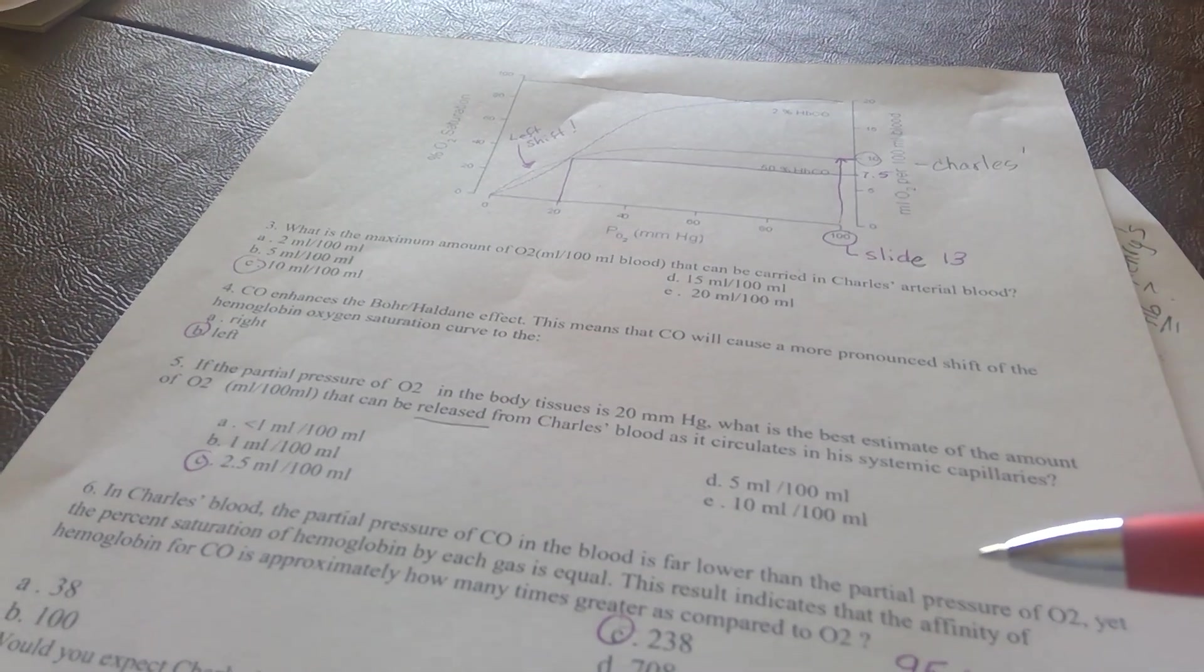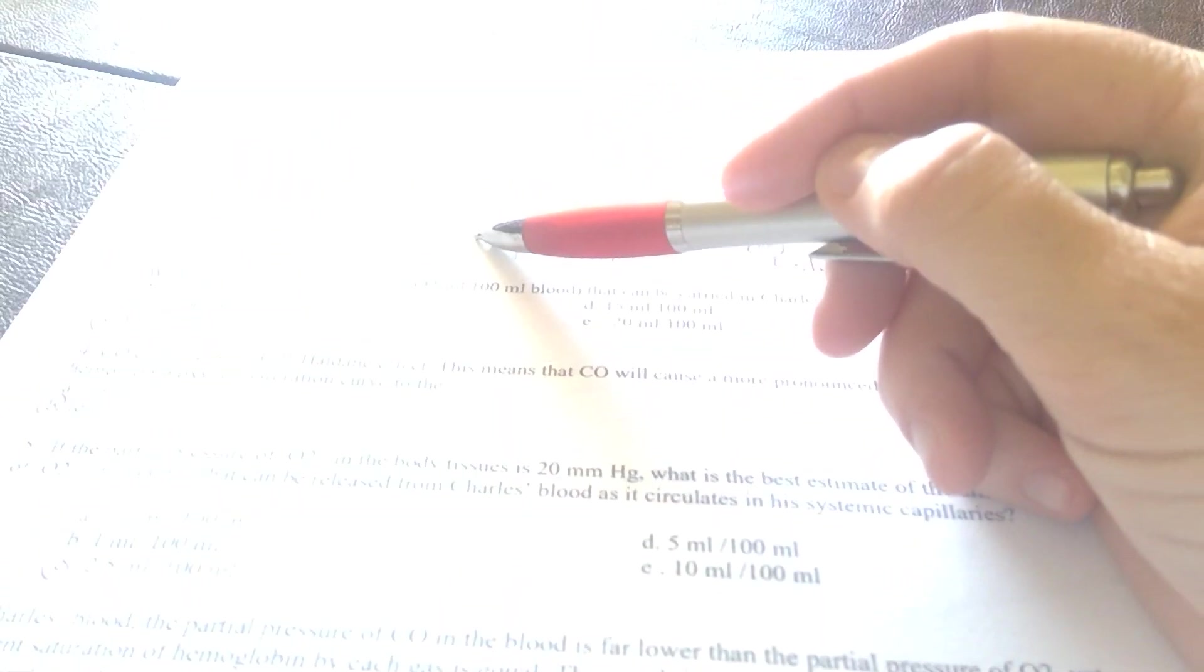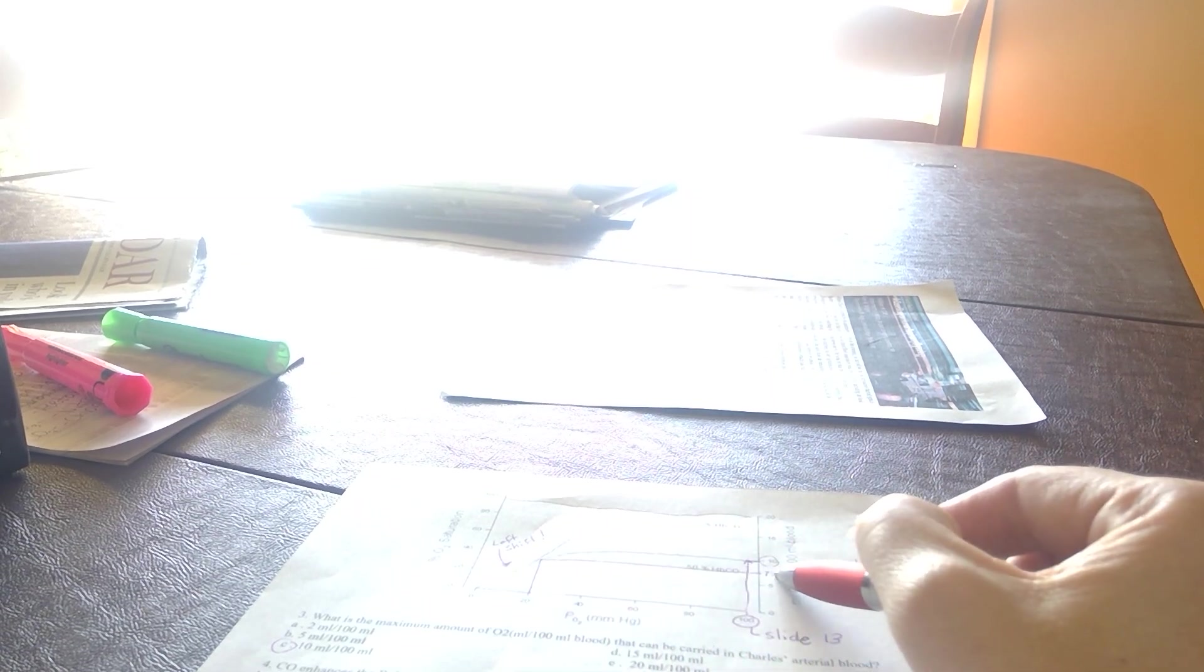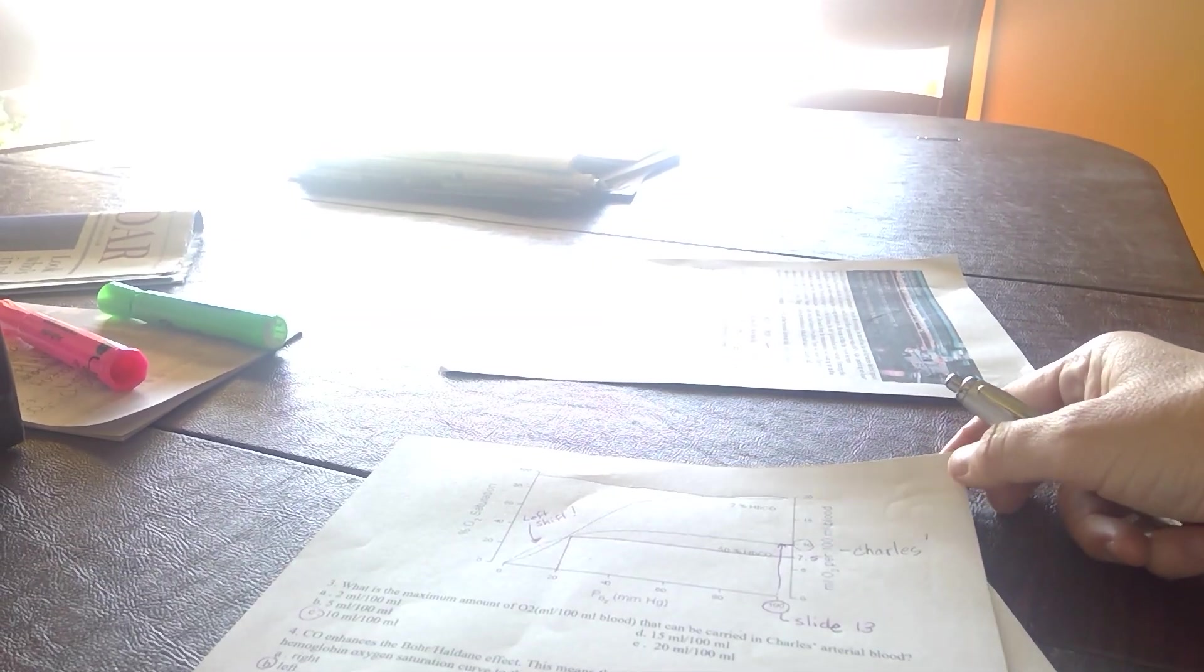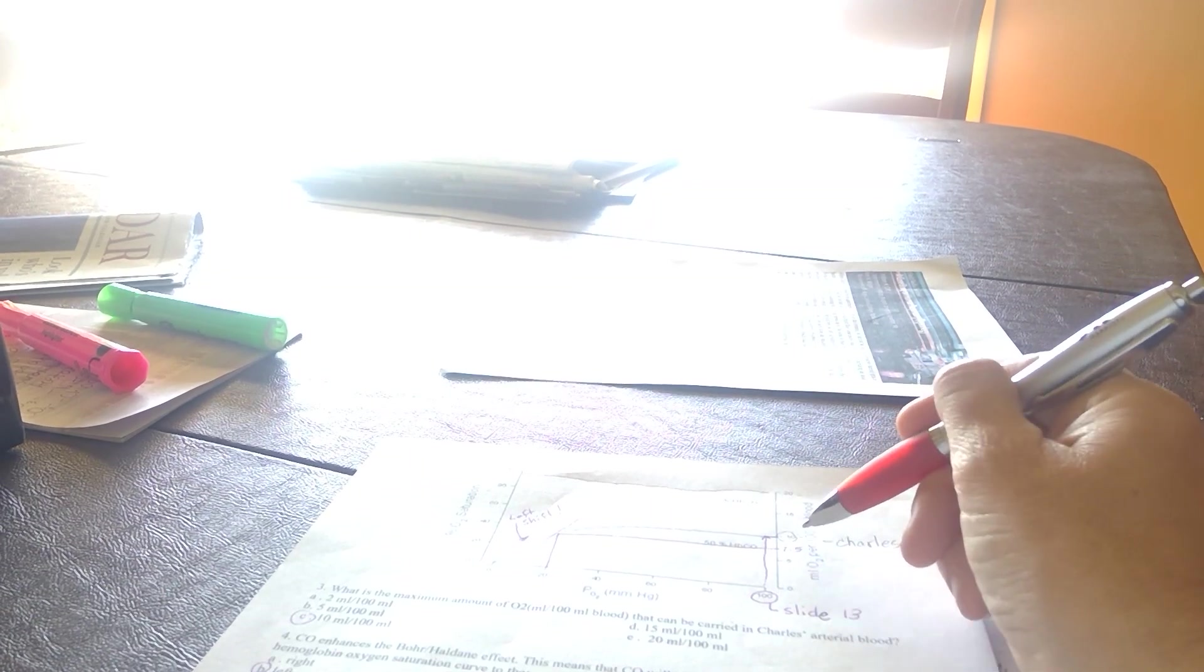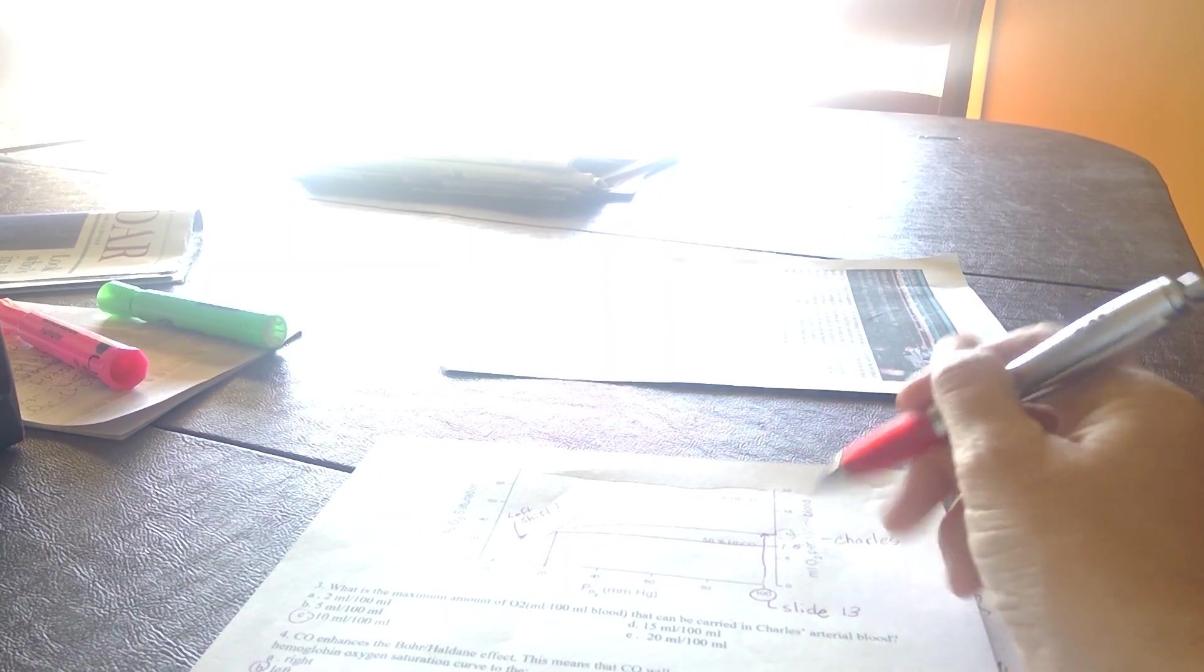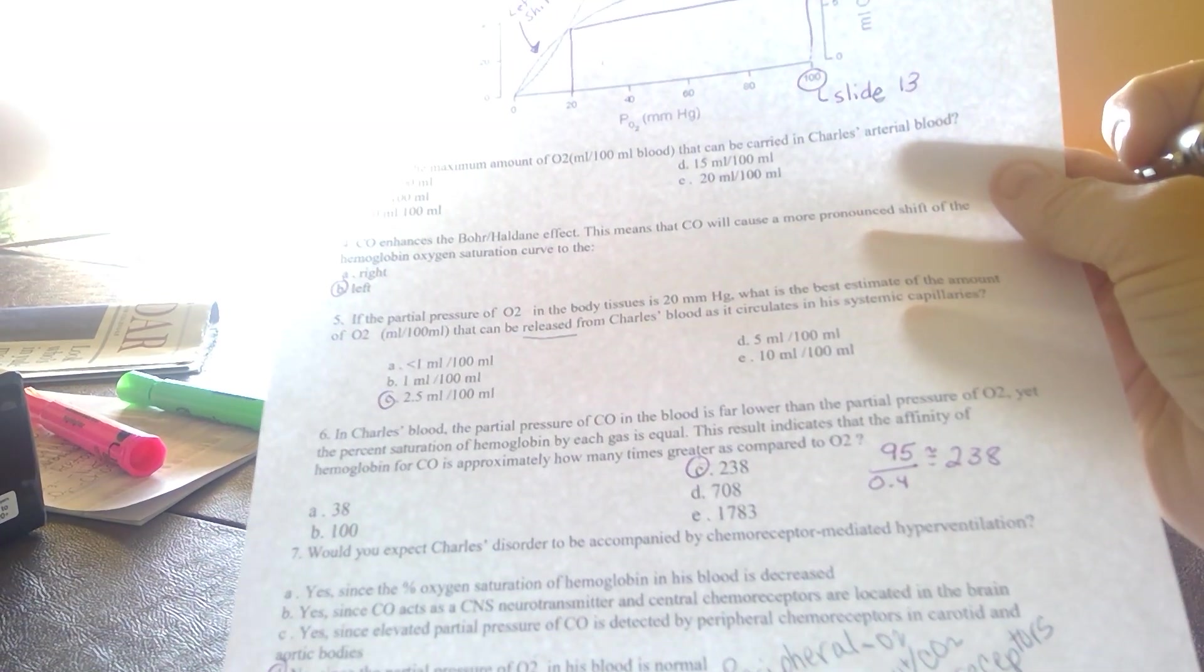Next question says, if Charles's tissues dip down to about 20 millimeters of mercury, what's the amount of oxygen from his blood that he can actually release? If I draw a vertical line from 20 millimeters of mercury up to Charles's curve, and then over, I get about 7.5 milliliters for every 100 milliliters of blood he transports. If I subtract the difference from how much he can carry versus how much he has after release, that means he releases about 2.5 milliliters of oxygen for every 100 milliliters of whole blood. So the correct answer is C.